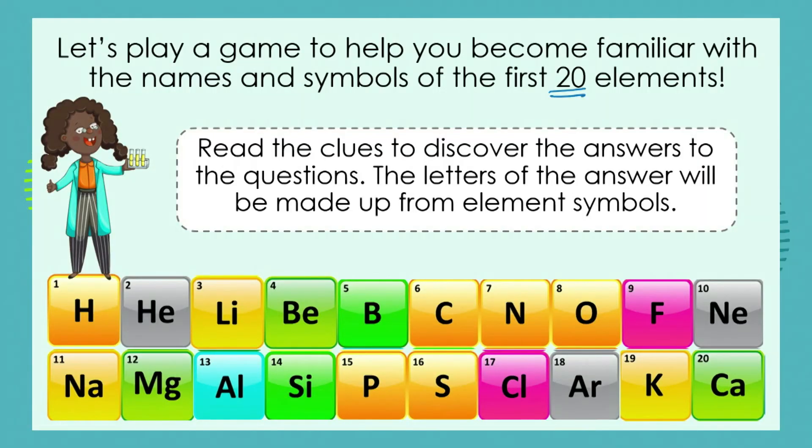Now let's start becoming very familiar with these first 20 elements. It's really not a good idea to try to sit down and learn them off by heart. The more you use them and look at the periodic table, the easier it will become to learn the names and symbols. One way I like to use with grade sevens is to play games. We're going to play a game — you'll read some clues and the letters of the answer will be made up from the atomic symbols.